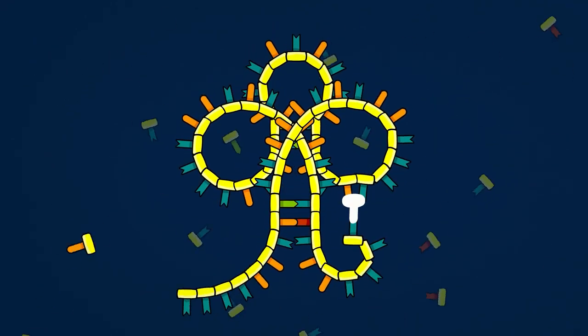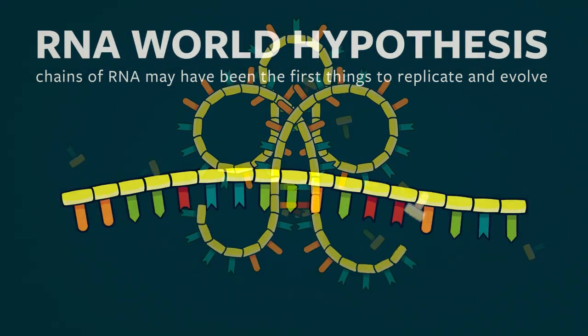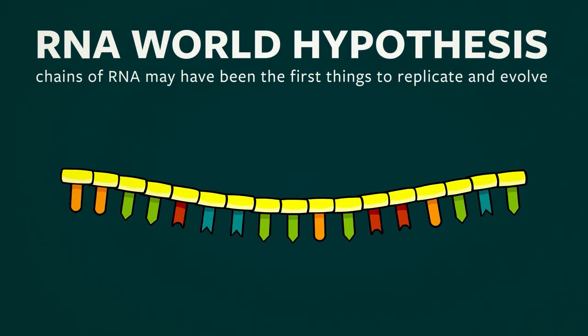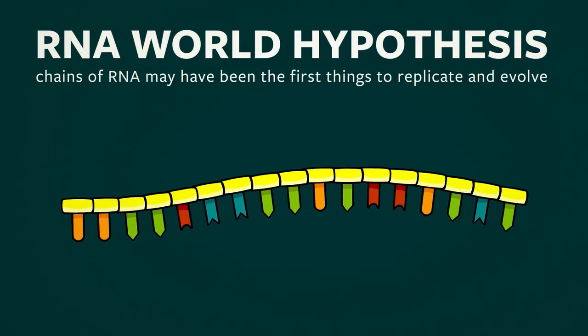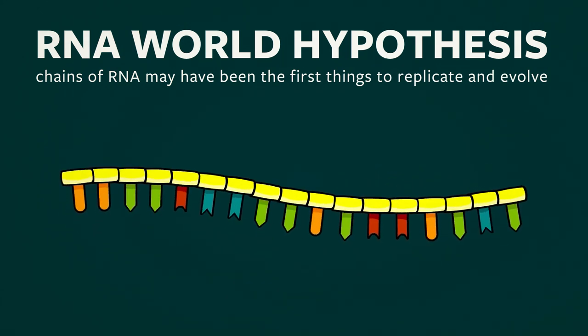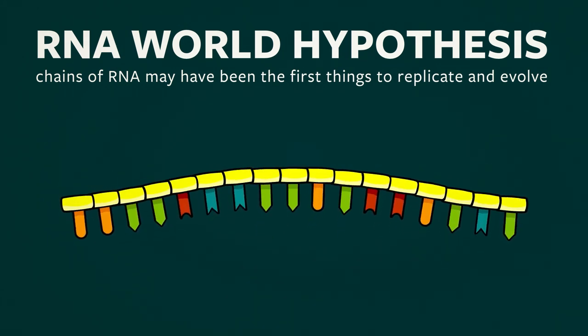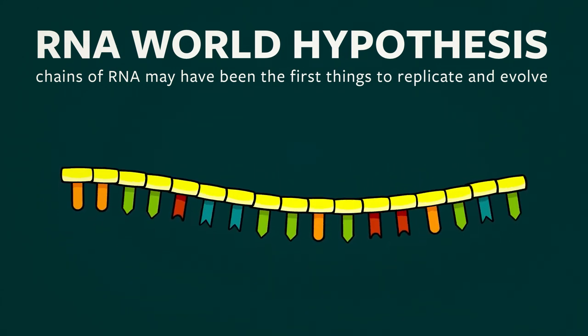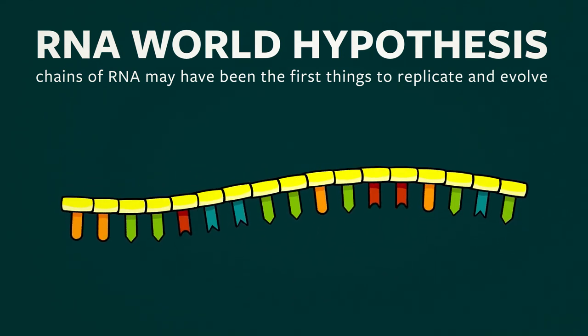Most origin-of-life researchers do not think that a pure RNA world existed. They don't think it was actually RNA as we know it today that was just replicating and evolving on the early Earth — the origin of life was likely far more messy. But Sol Spiegelman was a researcher who started doing some really cool experiments with chains of RNA.